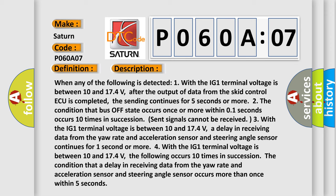When any of the following is detected: One, with the IG1 terminal voltage is between 10 and 17.4 volts, after the output of data from the SCID control ECU is completed, the sending continues for 5 seconds or more. Two, the condition that bus off state occurs once or more within 0.1 seconds occurs 10 times in succession.